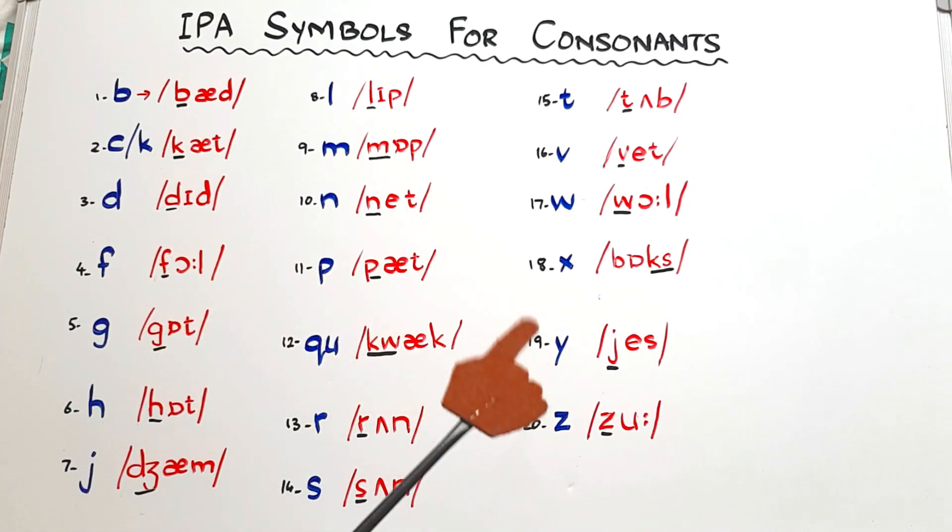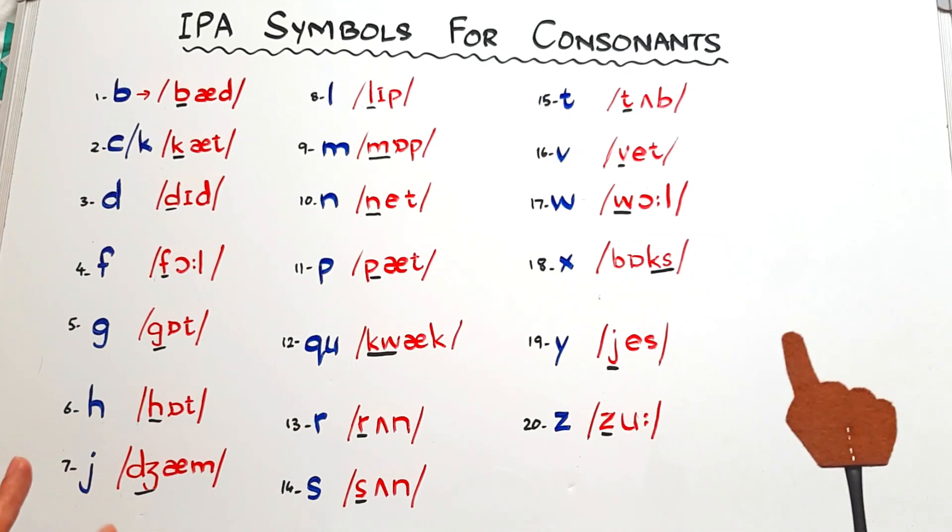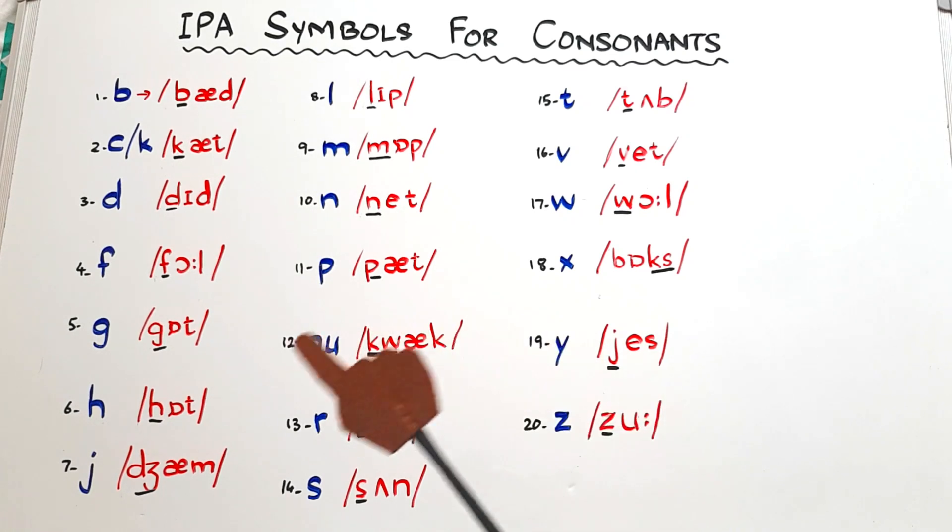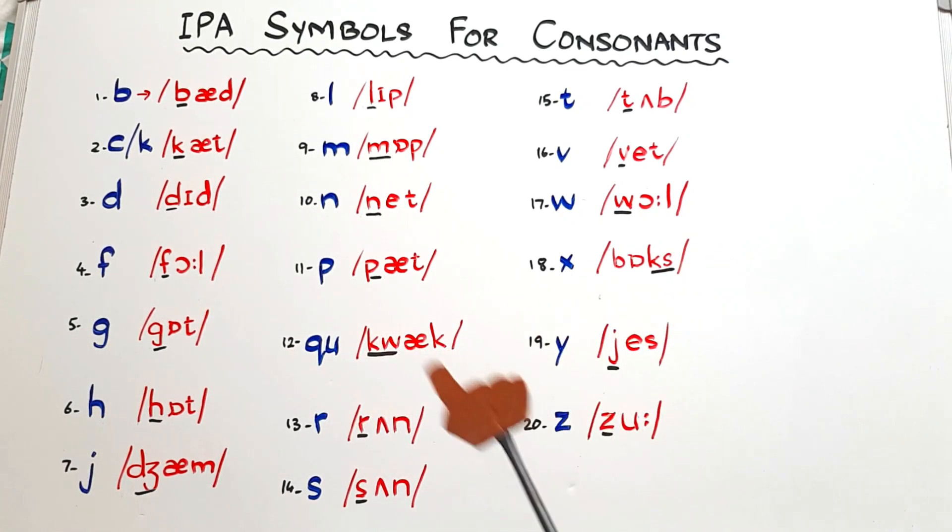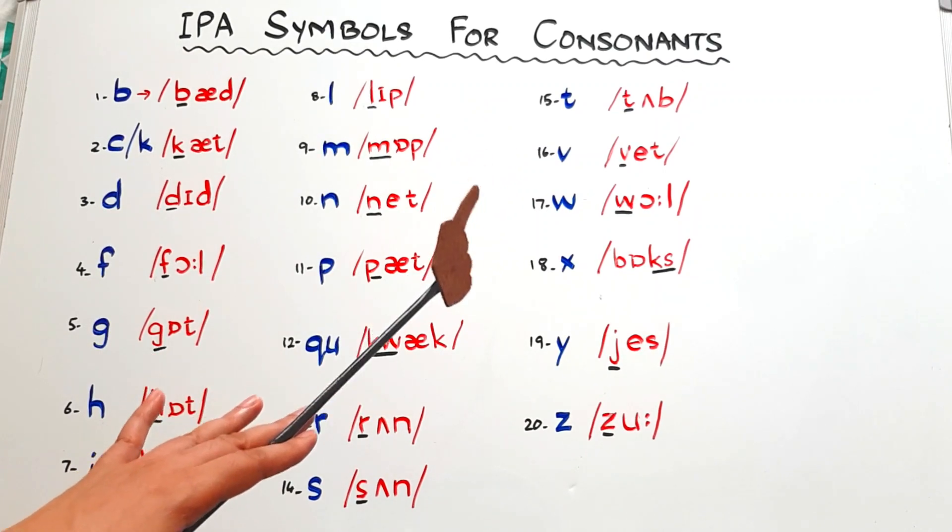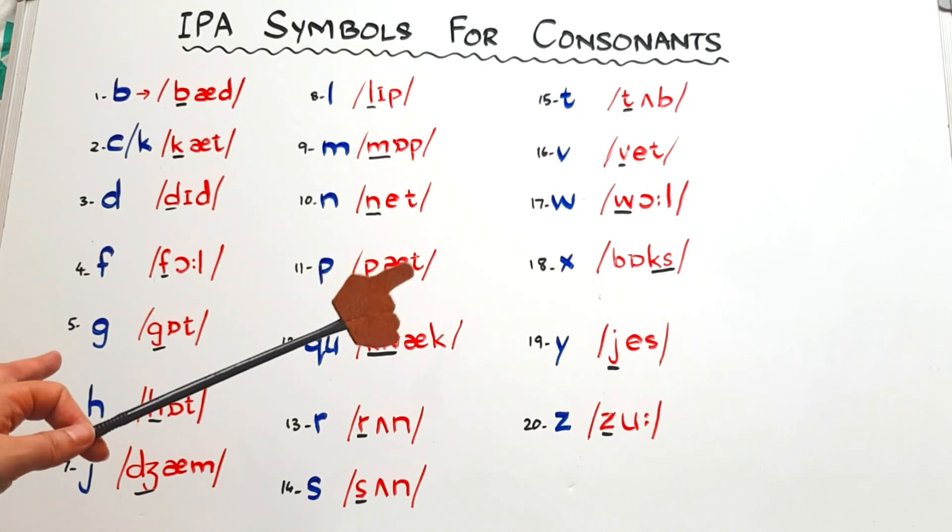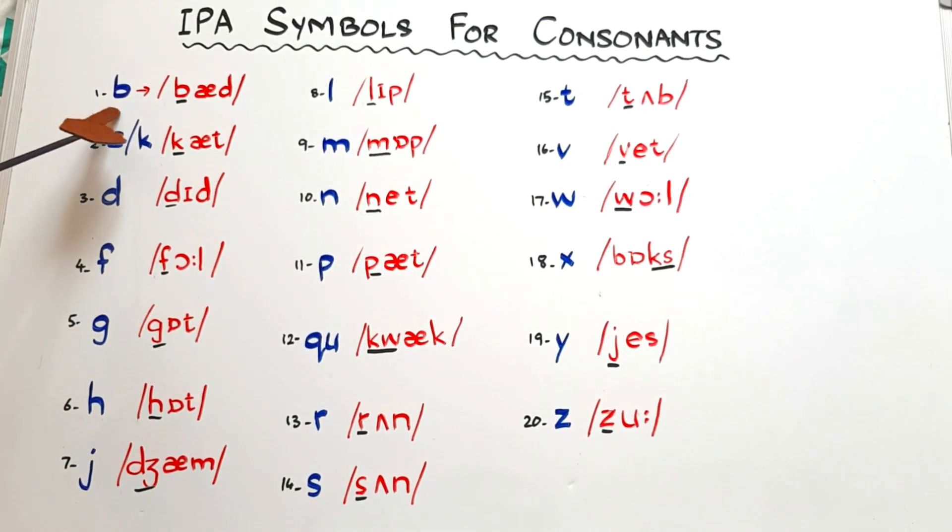If you are a learner of any foreign language, you should know the IPA symbols for that language. In English we also have these symbols, and today's video is all about the IPA symbols for consonants. Here are 21 consonants. Why I'm saying 21 but written 20 here - because C and K are two consonants having the same sound. So if you count them two, then they will be 21, and the five vowels, so the total number of letters is 26. Let's get started.